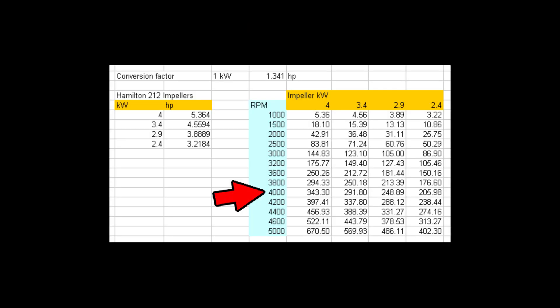And in this big block of numbers, we have the horsepower compared with the RPM for each of the impellers. So you can see the 4.0 impeller begins with 5.36 horsepower at 1,000 RPM, and by the time you're up to 5,000 RPM, that's 670 horsepower. So there you can see it's gone up a lot, and we have numbers arranged for each of the 4.0, 3.4, 2.9, and 2.4 impellers.